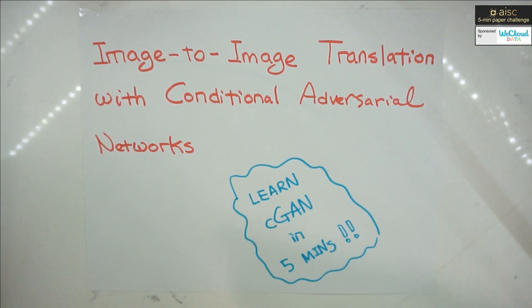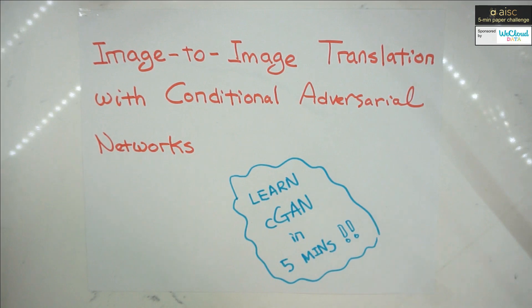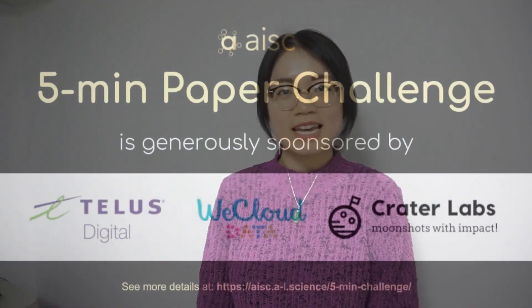Looking at the details across different datasets, you can see the authors do a good job developing a general framework without being application-specific, though there is still more room for researchers to explore. After this presentation, you should be able to use conditional GANs for image-to-image translation. If you're interested in the paper, check out the link below for the authors' GitHub where you can try and test the model yourself. Thanks for watching!